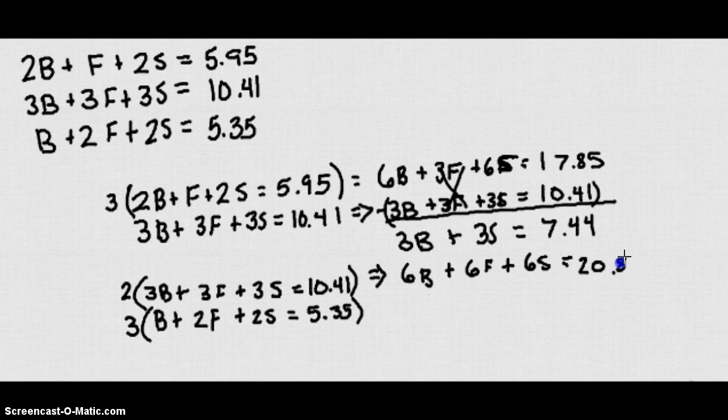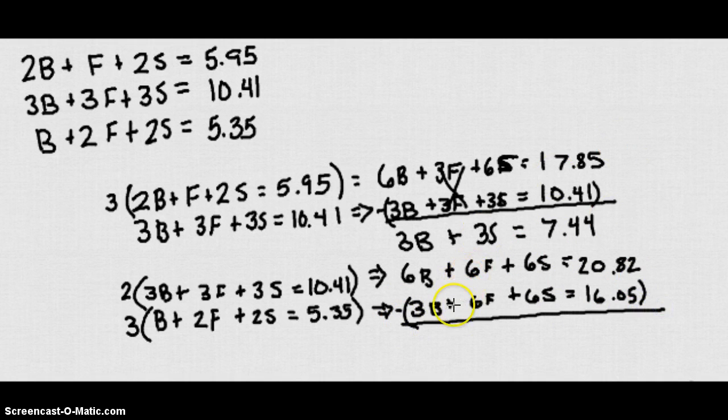And if I multiply the bottom by 3 we'll get 3B plus 6F plus 6S equals 16.05, and then I can subtract that bottom one from the top one. That way my F's will cancel out so I get 6 minus 3 is 3B. I get these to cancel out and actually my 6S cancel out as well, so I'm left with 20.82 minus 16.05 and that's going to give me 4.77. So B I can actually solve for is going to give me 1.59 for B.